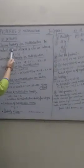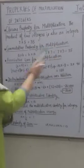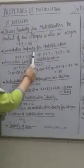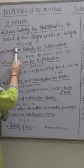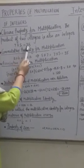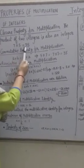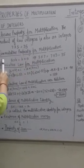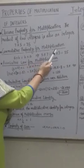The first property is the closure property for multiplication. The product of two integers is also an integer. For example, if 7 is an integer and 5 is an integer, then 7 × 5 = 35, and 35 is also an integer.